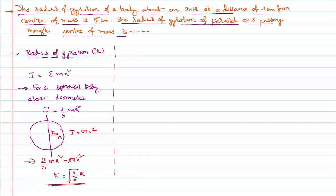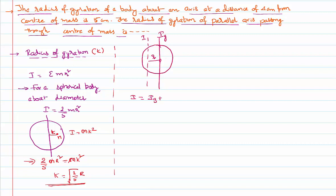We also discussed in the previous video that if you know the moment of inertia about the center of mass axis, you can find the moment of inertia about a parallel axis using the parallel axis theorem. If this is an axis passing through the center and Ig is the moment of inertia, then to calculate the moment of inertia I about a parallel axis separated by distance r, the parallel axis theorem gives I = Ig + mr². I have proved this in the rotational dynamics playlist — please go through that if you are not aware of the proof.